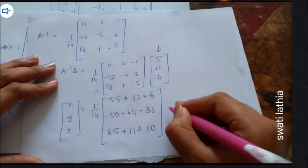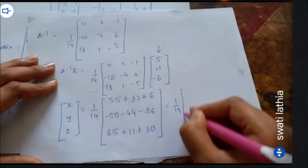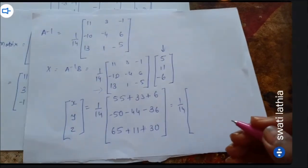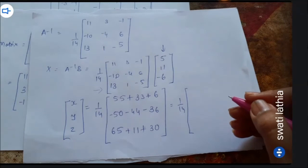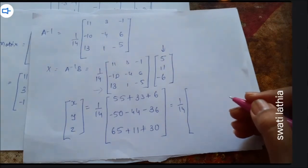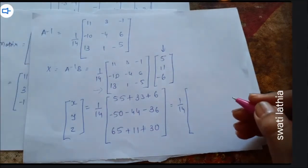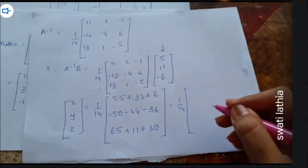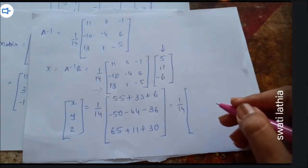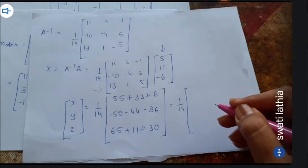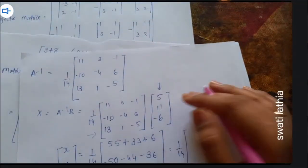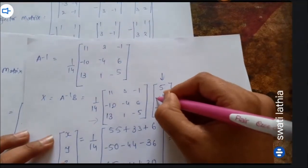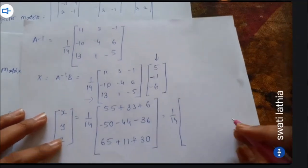Which equals 1 upon 14. Let us now check the addition and subtraction. Just a minute — let me verify the signs are correct. I think the 11 in the matrix should actually be minus. My mistake.